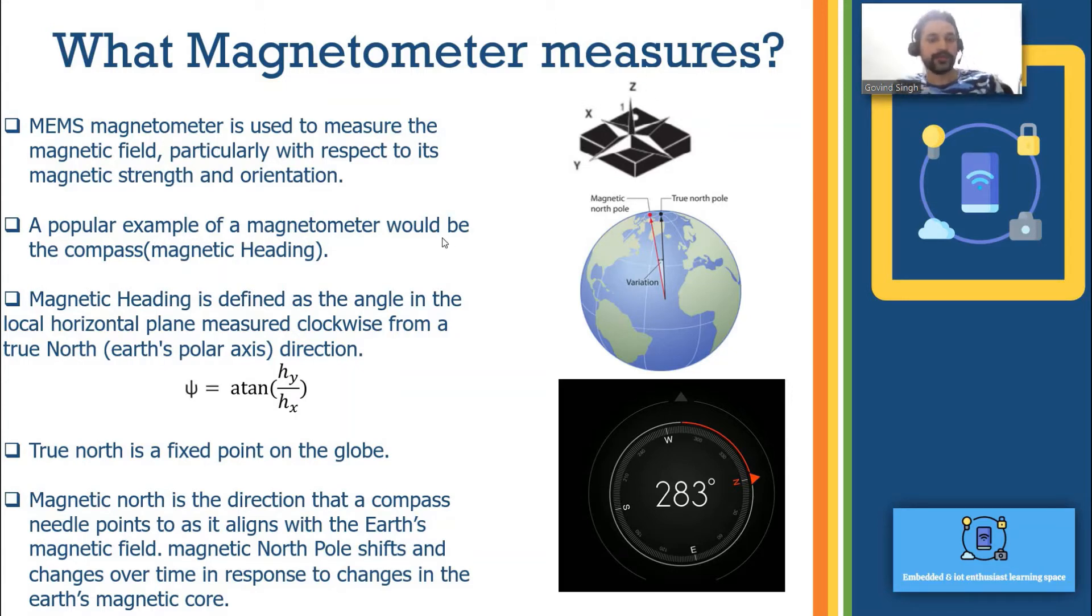A popular example of magnetometer would be compass. This is the snapshot of the compass application. Magnetic heading is defined as the angle in the local horizontal magnetic plane clockwise from true north. The angle we are having in our plane with respect to the true north is called the magnetic heading.